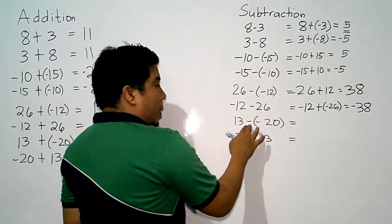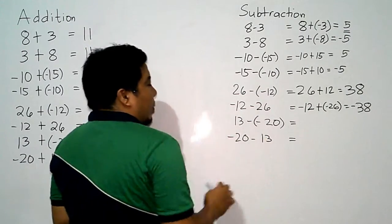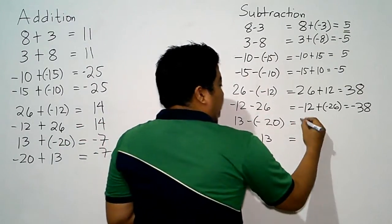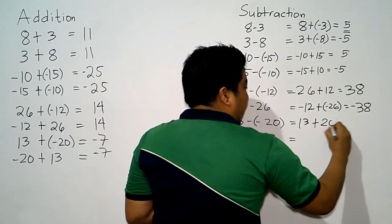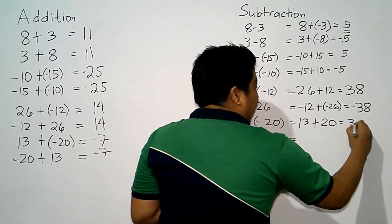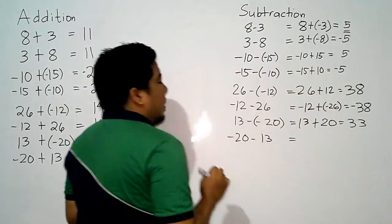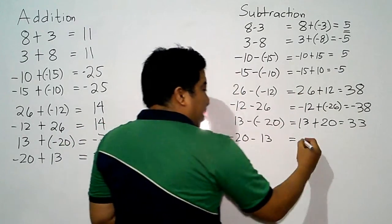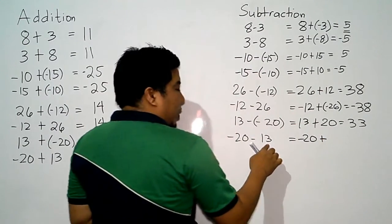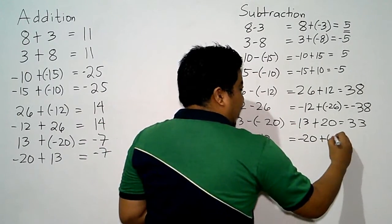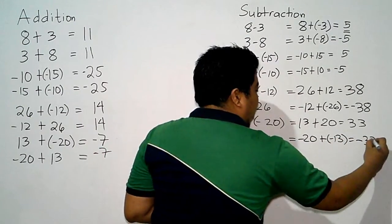Let us compare that to subtraction. We have 13 minus 20: copy 13, the minus becomes plus, and negative 20 will become positive 20. Positive plus positive gives us positive 33. Then negative 20 minus 13: copy negative 20, the minus becomes plus, and positive 13 will become negative 13. Negative plus negative gives us negative 33.